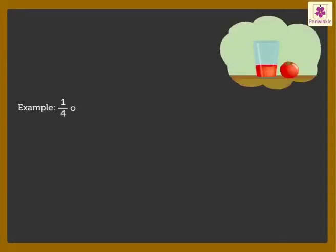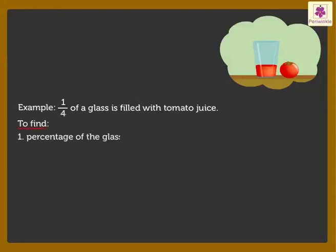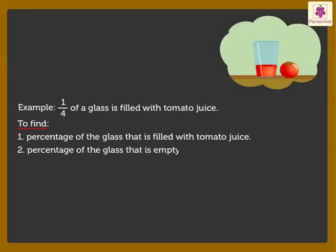One-fourth of a glass is filled with tomato juice. Find: 1. Percentage of the glass that is filled with tomato juice. 2. Percentage of the glass that is empty.